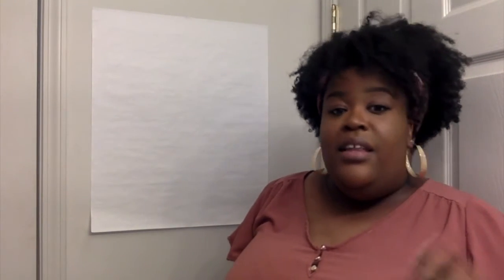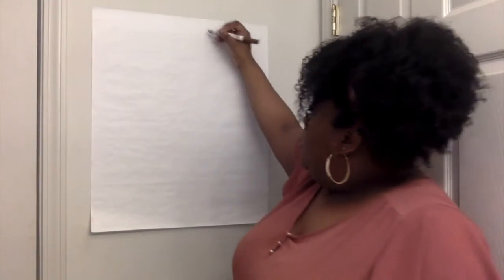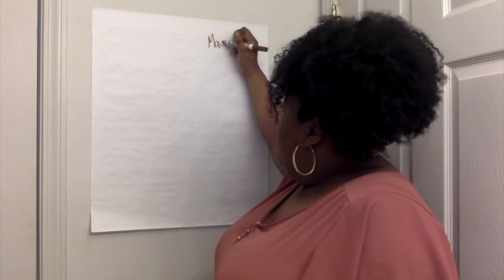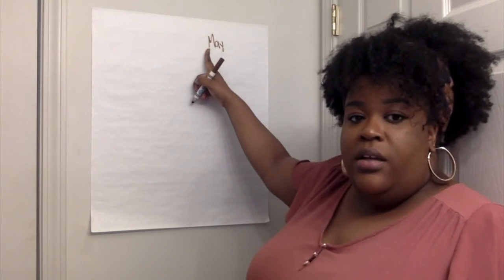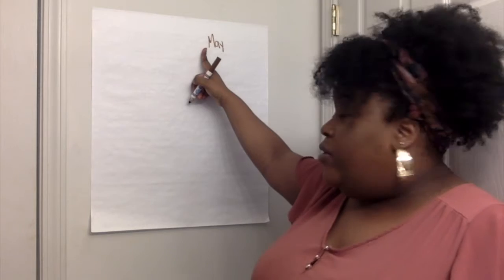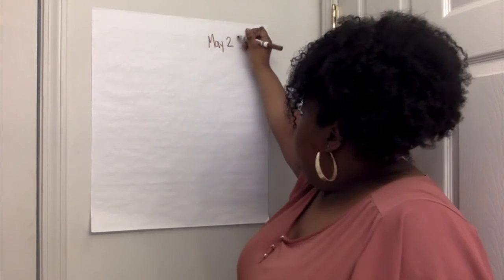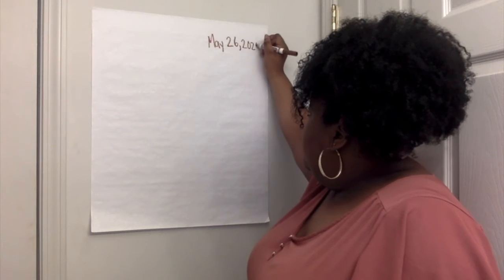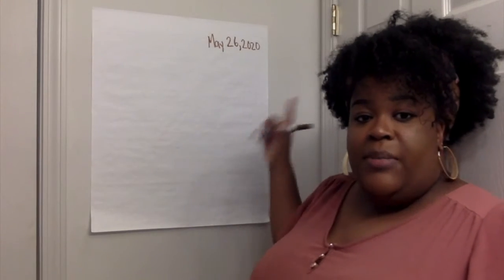Now remember, first we need to have the heading. The heading has the date, so I need to put today's date as my heading. Today's date is May 26, 2020, so I'm going to write that right here at the top. May — remember, months of the year always get a capital letter — May 26, comma, 2020. Alright, so that's my heading.